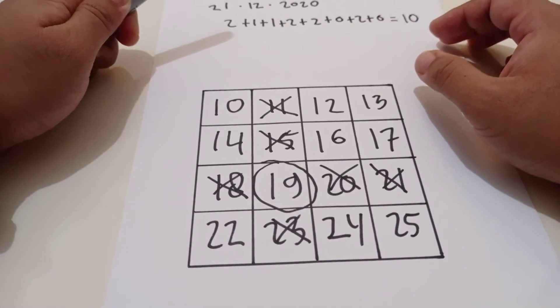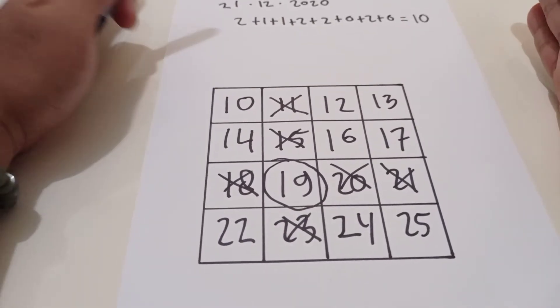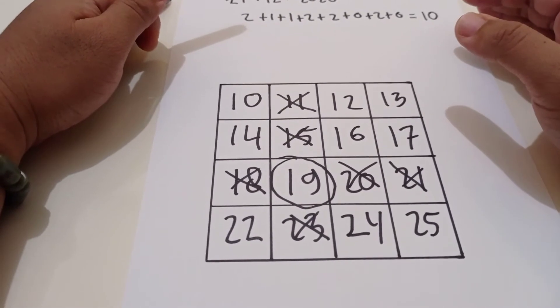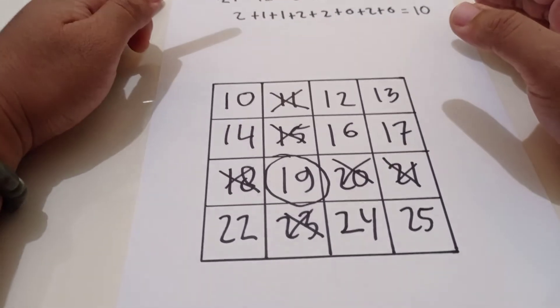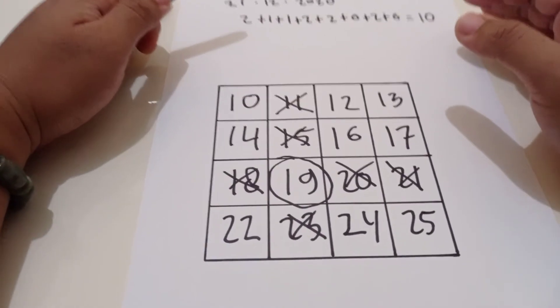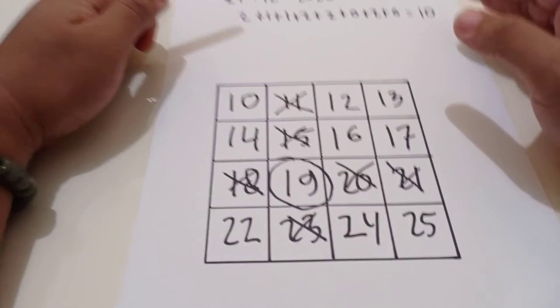Once again, do it once again. Select any remaining number and eliminate the other numbers in that same row and column. Now that leaves just one number, so add that number to your three selected numbers to produce the total.